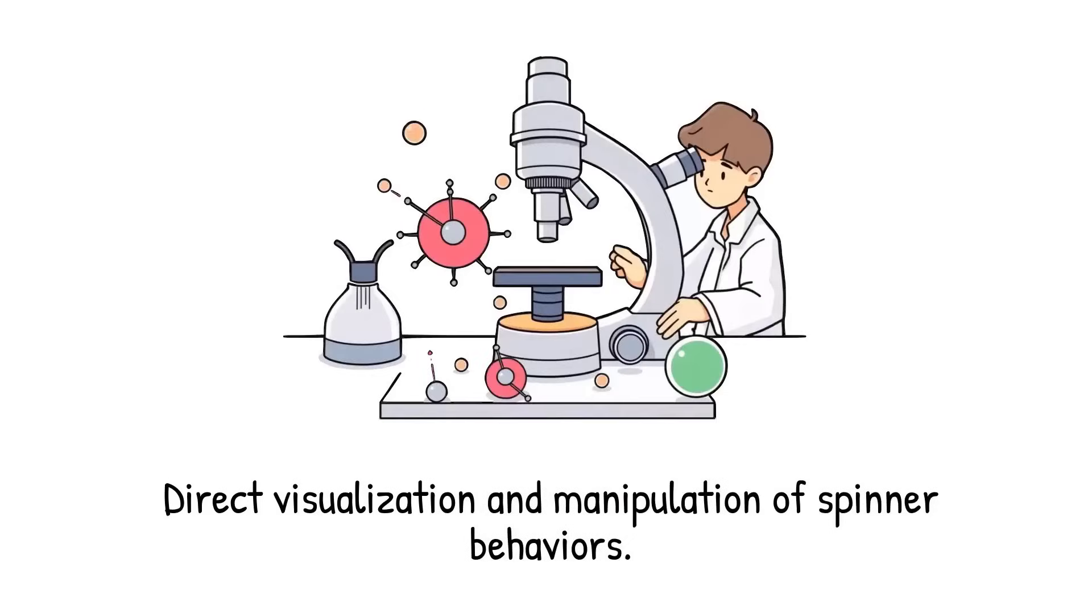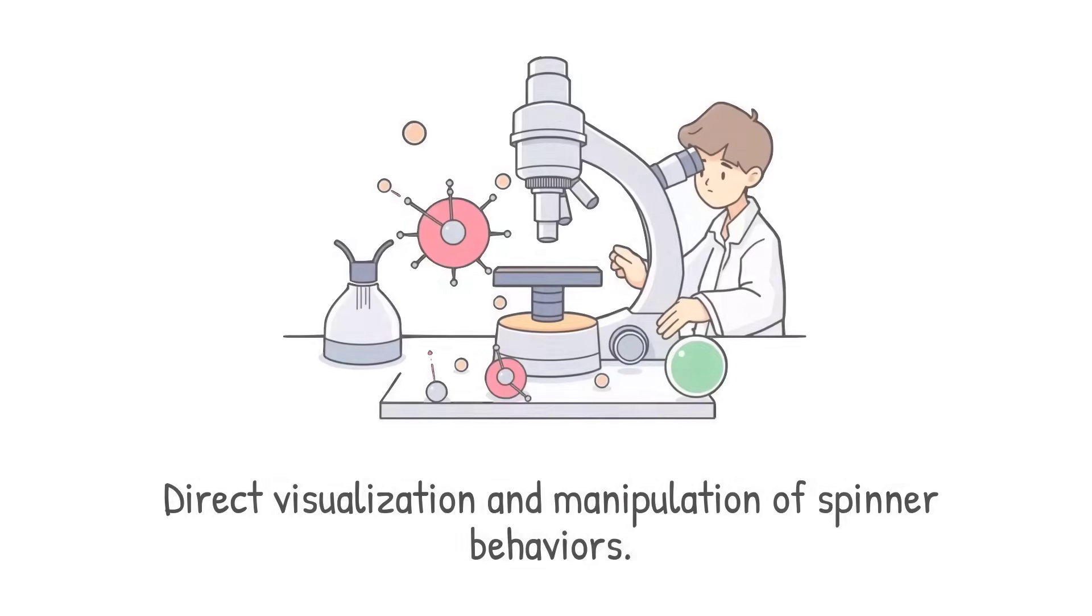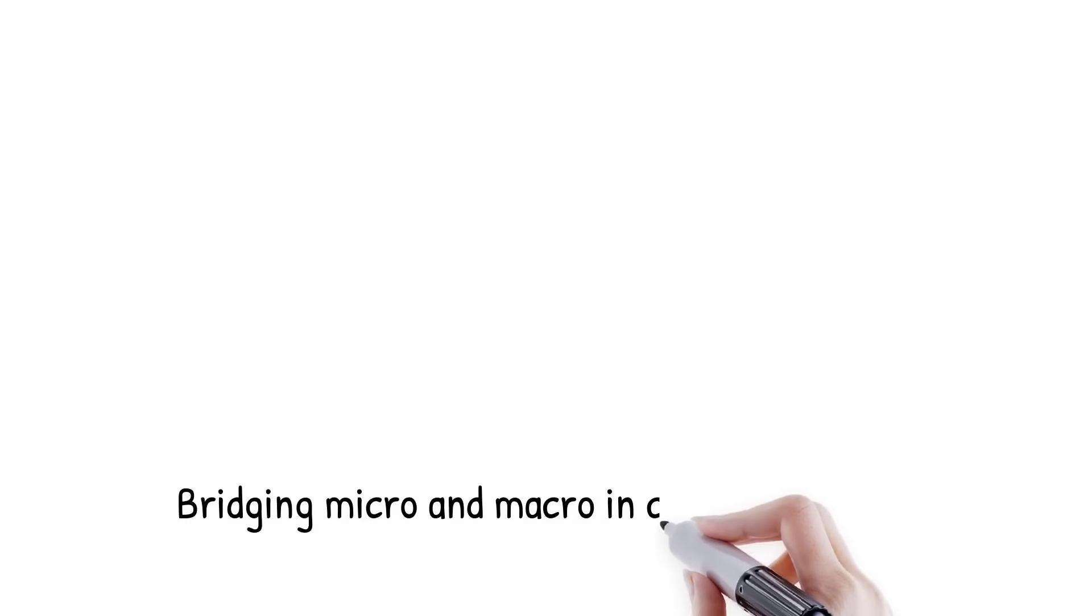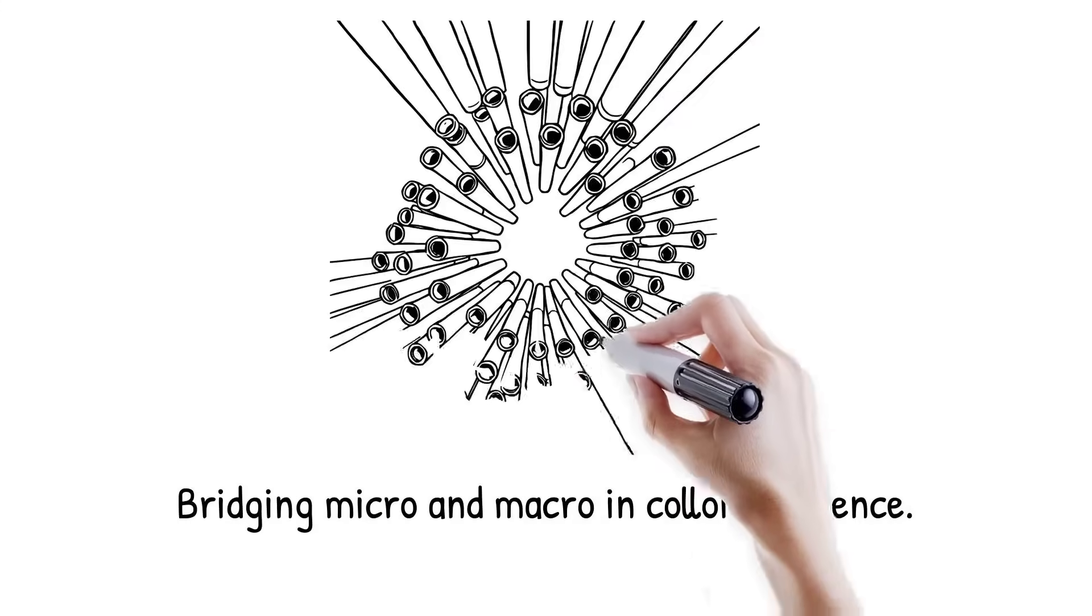Rolled-up microtubes hundreds of microns in length rotate coherently, yet display collective instabilities. It is like magnifying a chessboard, so large that the rules are the same, but new strategies appear.